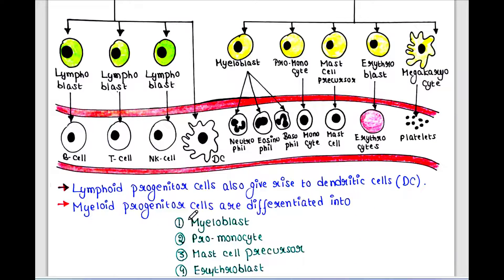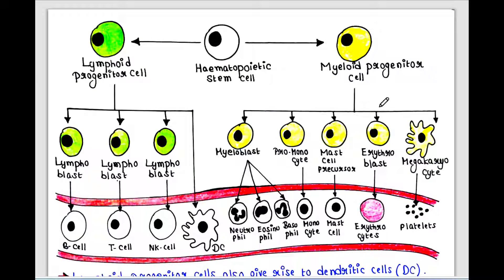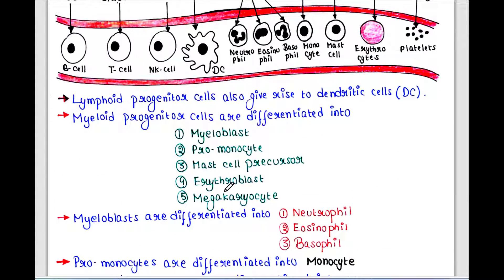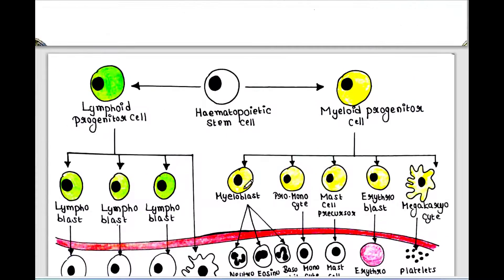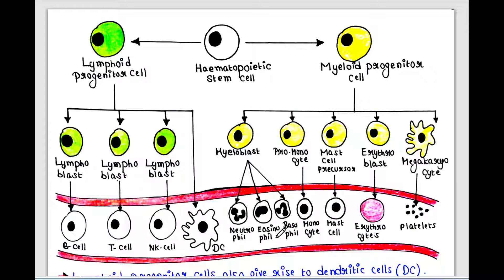Myeloid progenitor cells are differentiated into myeloblasts, promonocytes, mast cell precursors, erythroblasts, and megakaryocytes. Myeloblasts are further differentiated into neutrophils, eosinophils, and basophils.